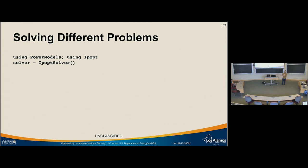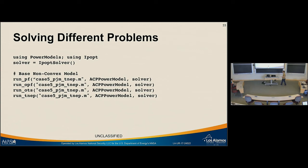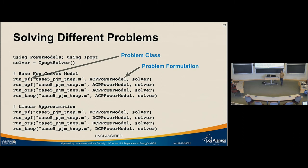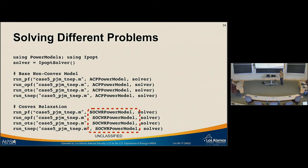If you want to run AC power flow or an optimal transmission switching problem, we model this by separating the function name—runPF or runOPF—which tells you the problem class, from the argument which is the problem formulation. When you combine problem class with problem formulation, you get a mathematical model. You can clearly see: run all these different problems with the non-convex AC equations, or run the same problems with the DC linear approximation. Not every combination is implemented, but Julia will tell you if a combination hasn't been defined, and then you can implement it or ask me to.